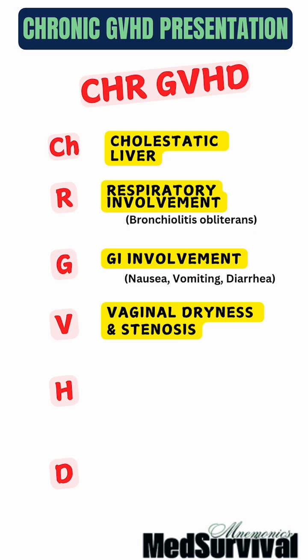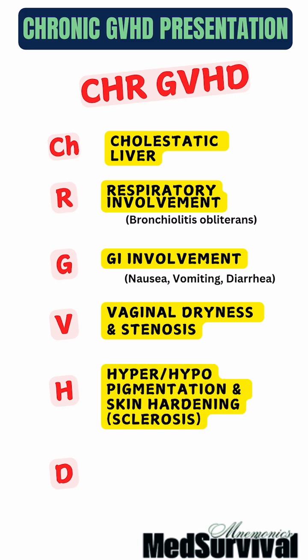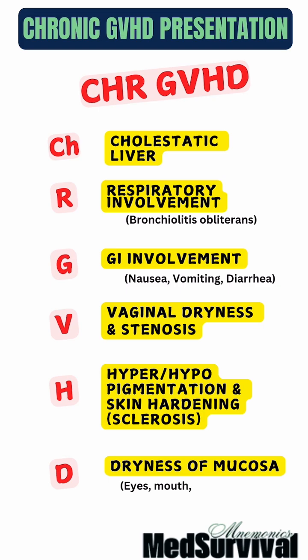The letter H reminds us of hyper- and hypopigmentation and skin-hardening sclerosis, which are characteristic skin changes. The letter D highlights dryness of mucosa, which includes dryness of the eyes, mouth, and vaginal mucosa.